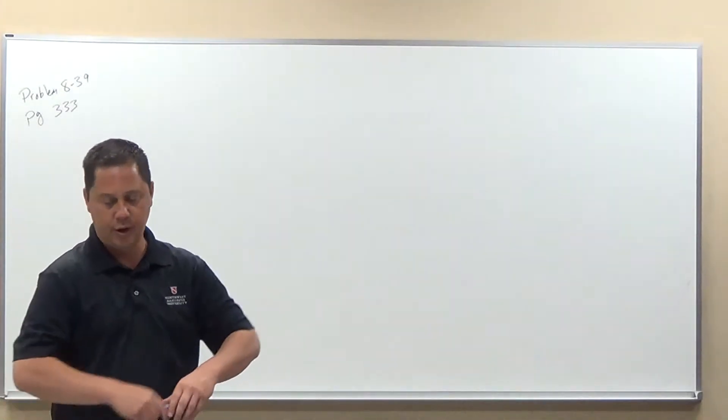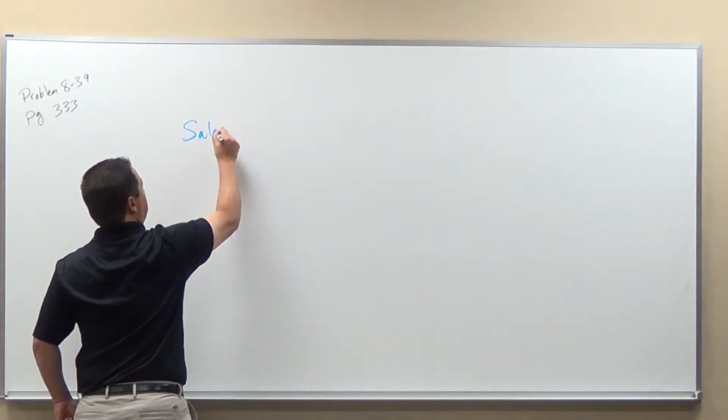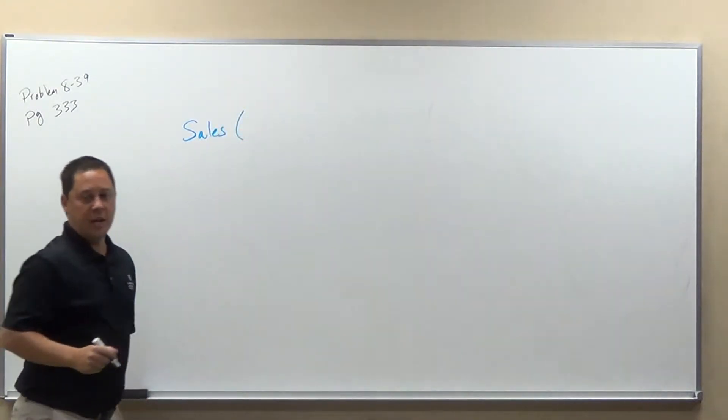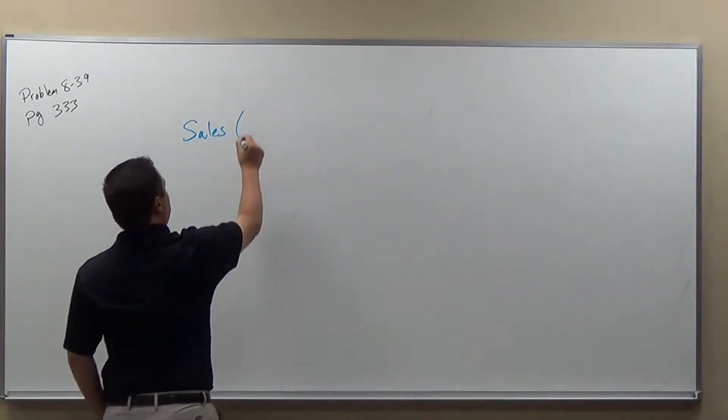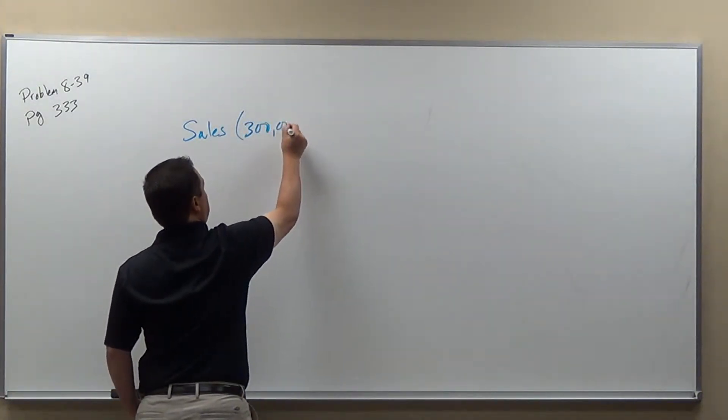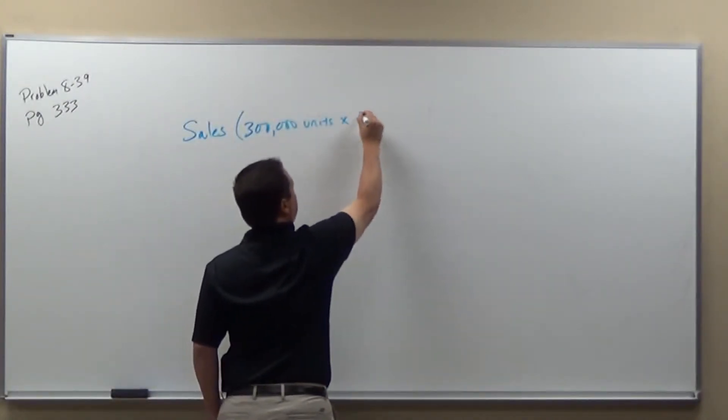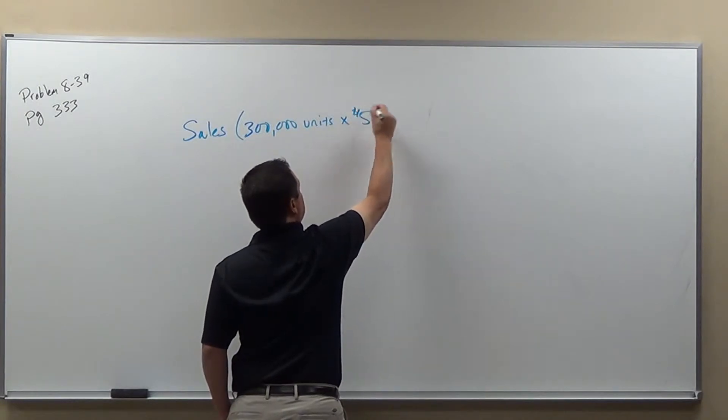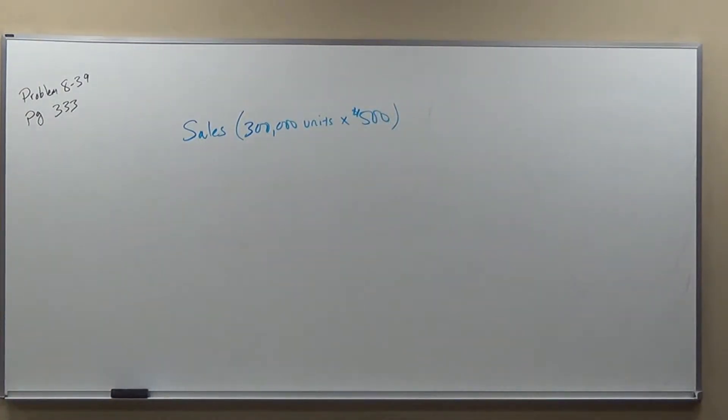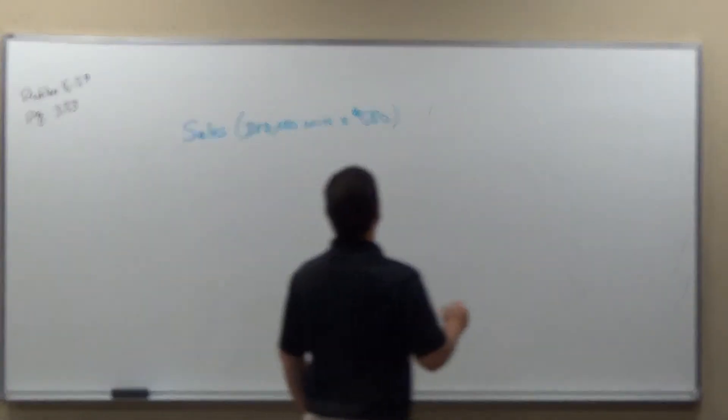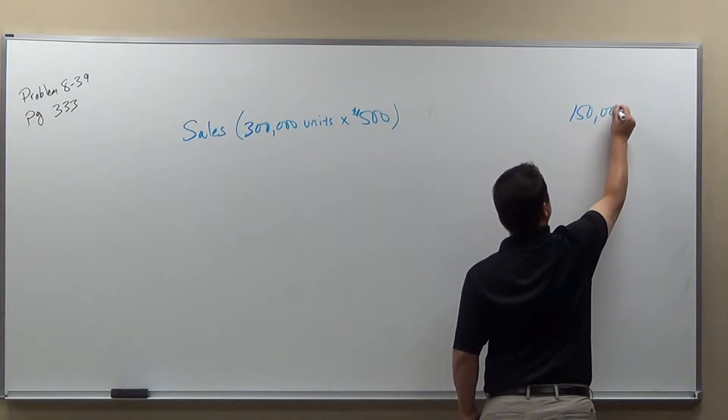What we're going to do here is figure out what the sales are. So first thing is we take a look at the sales. The sales he had was 300,000 units times $500. That will give us how much we have in sales, which looks like $150,000,000 in sales.